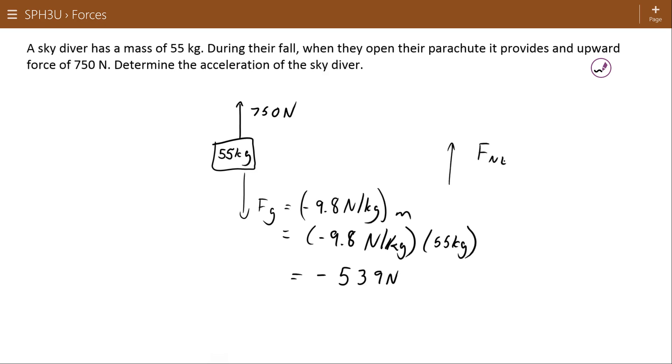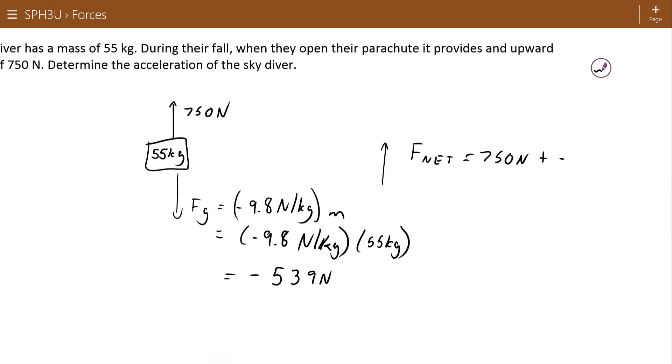If I total those two as my net force, I have 750 as a positive plus negative 539. And this parachuter will be subject to a net force of 211 Newtons up.